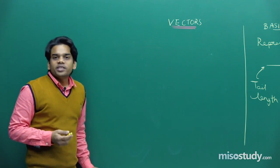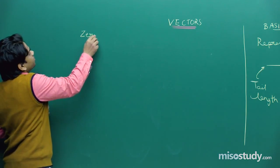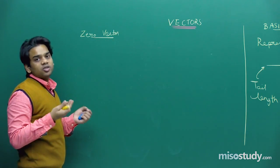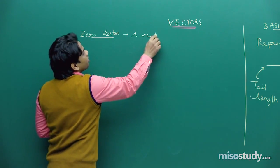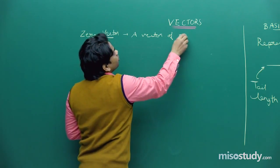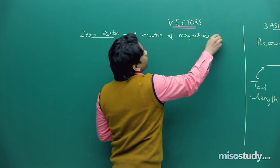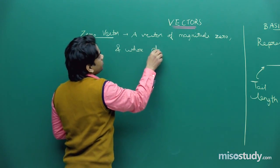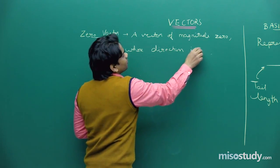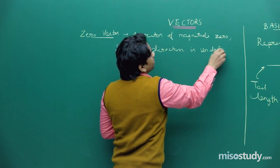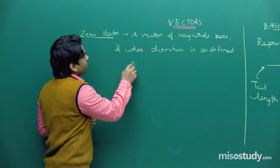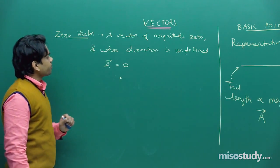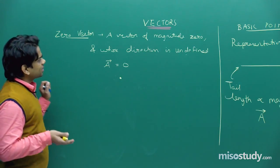Next is the zero vector. A zero vector is a vector whose magnitude is zero and whose direction is not defined. Its representation is just a dot. It has no physical significance and no magnitude.